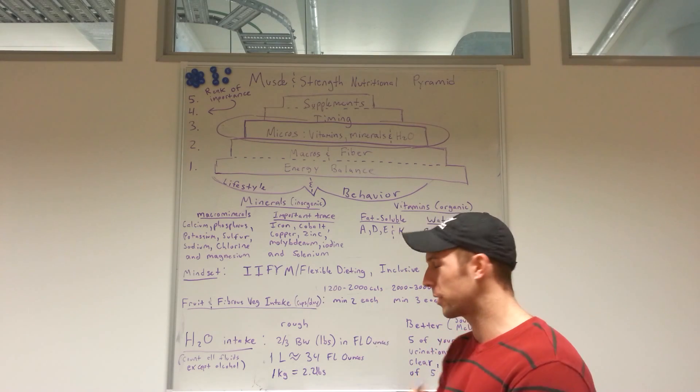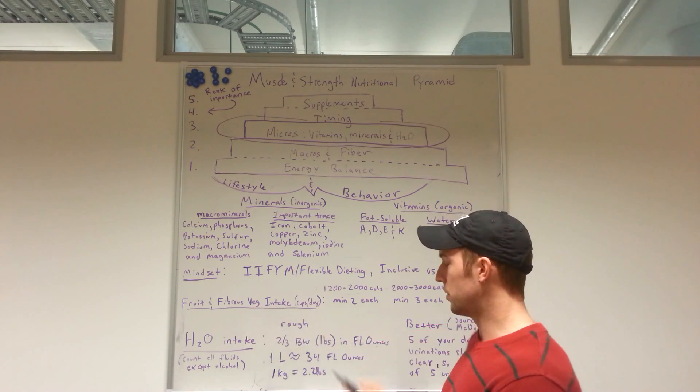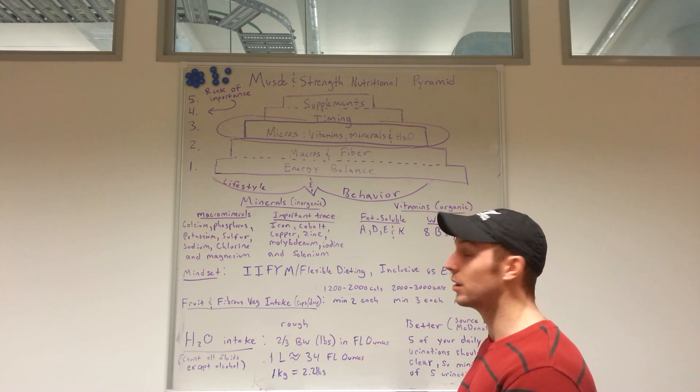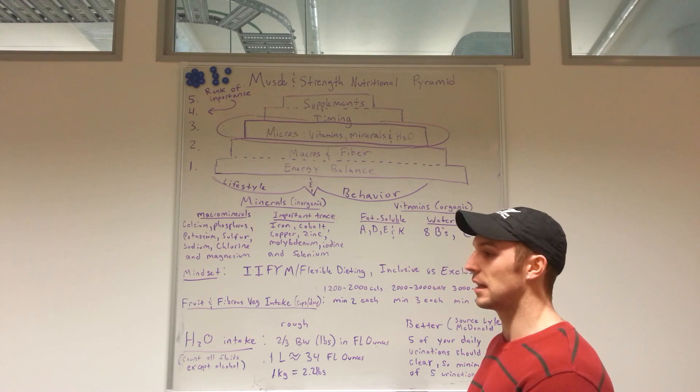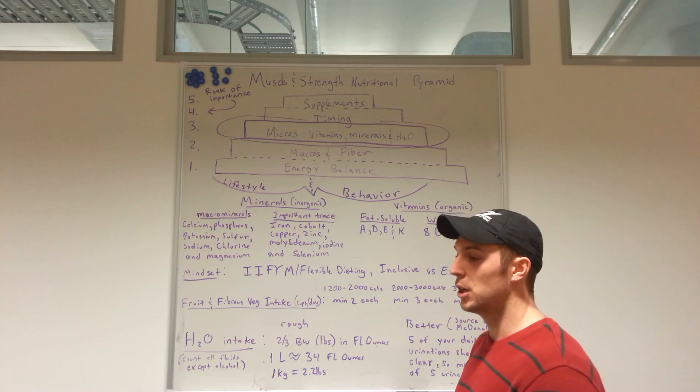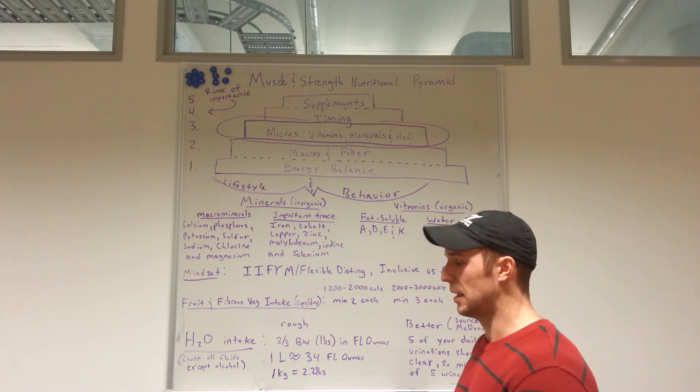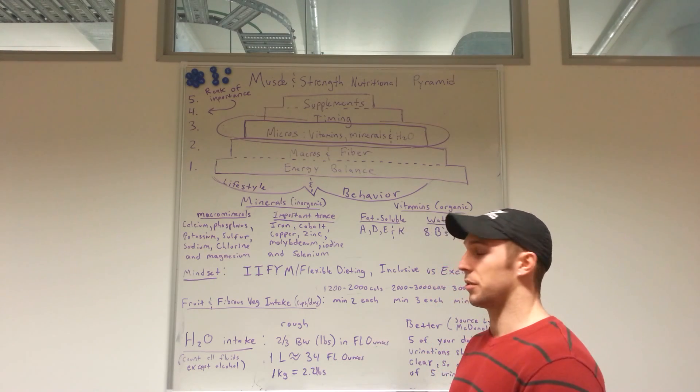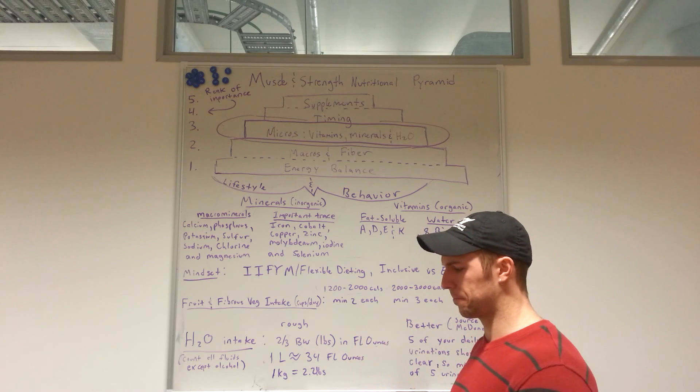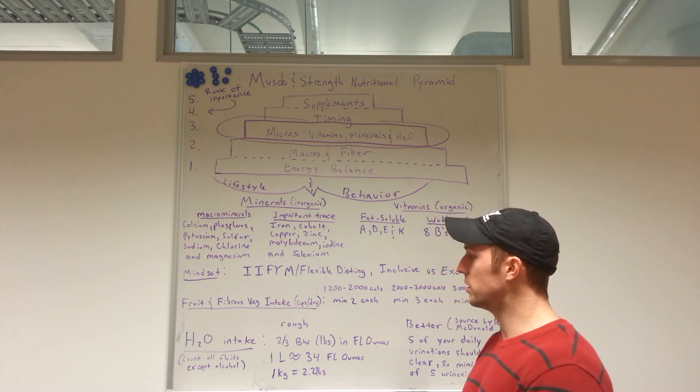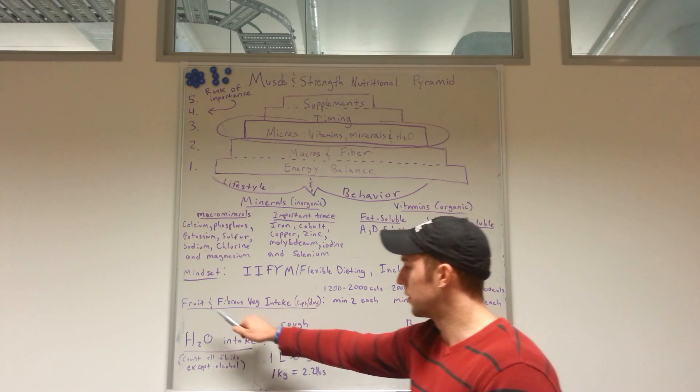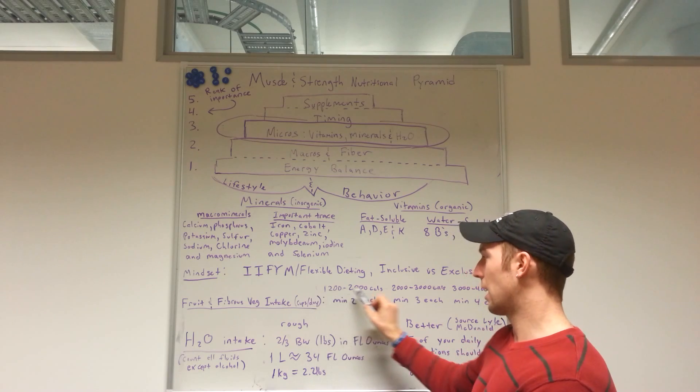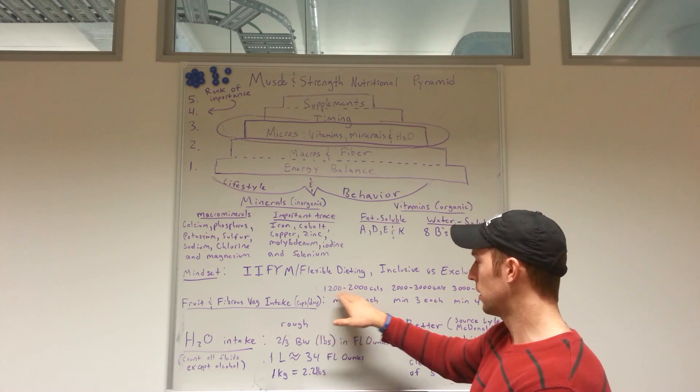So how do we do that? Fruit and fibrous vegetable intake. The reason why I'm focusing on these food sources is because typically the average bodybuilder is going to be good to go in terms of having adequate intake of micronutrient minerals that come from your starchy carbs, especially in the off season, your meats, and dairies especially in the off season, eggs, and a lot of the micronutrients that come from those food sources. And what we need to make sure we also have intact is the fruits and veggies. So first off, we have it categorized based on calorie intake.